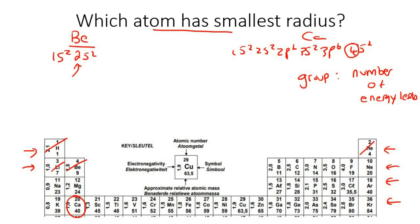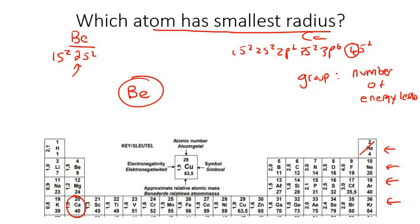So which atom has the smallest radius? It would be beryllium. Finally, you will not be able to compare the radius of atoms that are neither in the same period nor in the same group — there are too many variables at play, and you won't be asked to compare those.